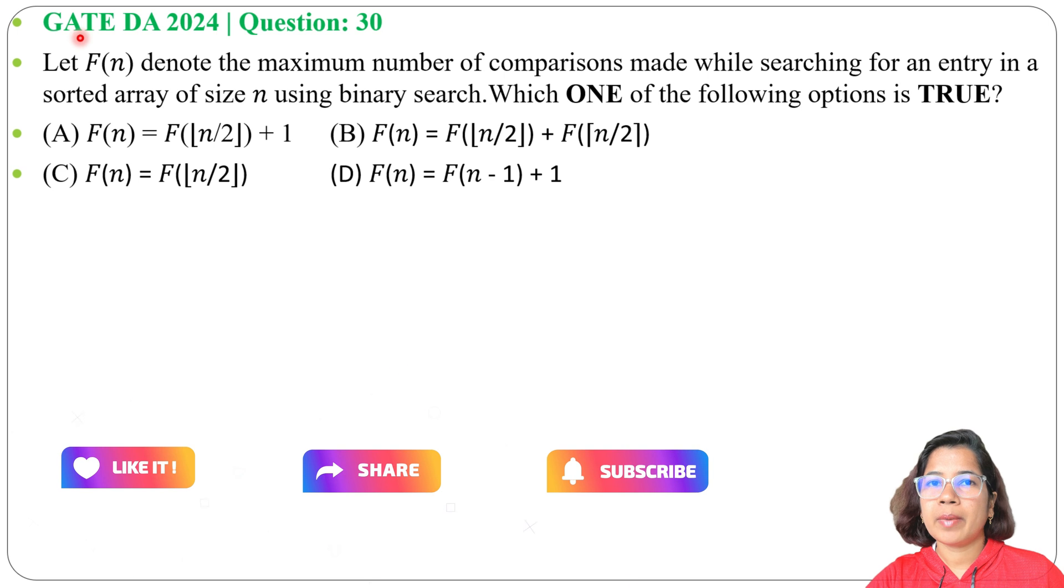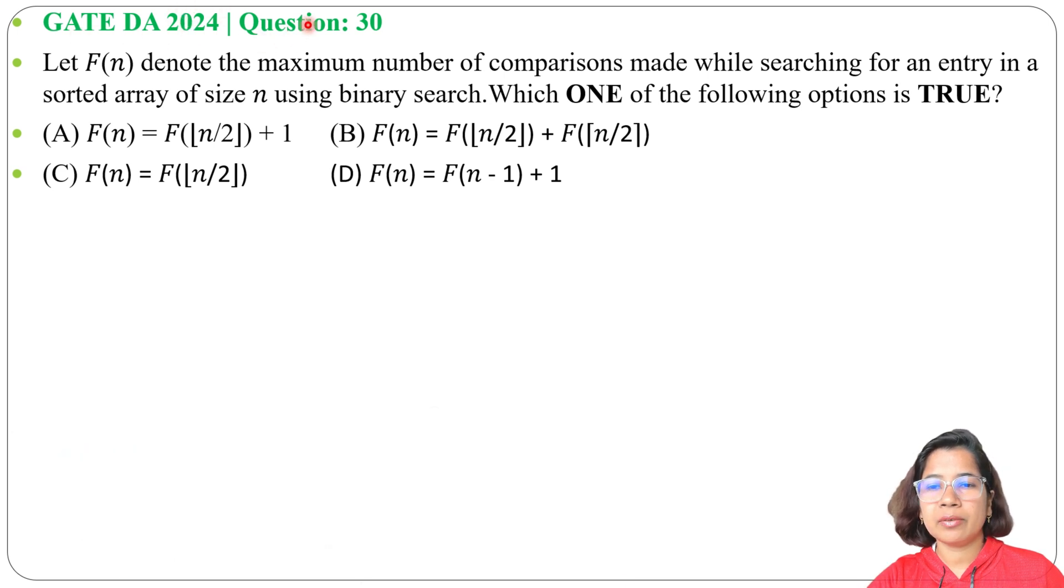Let's solve one previous question of binary search. This question was asked in GATE DA 2024 question number 30. Let F denote the maximum number of comparisons made while searching for an entry in a sorted array of size N using binary search.